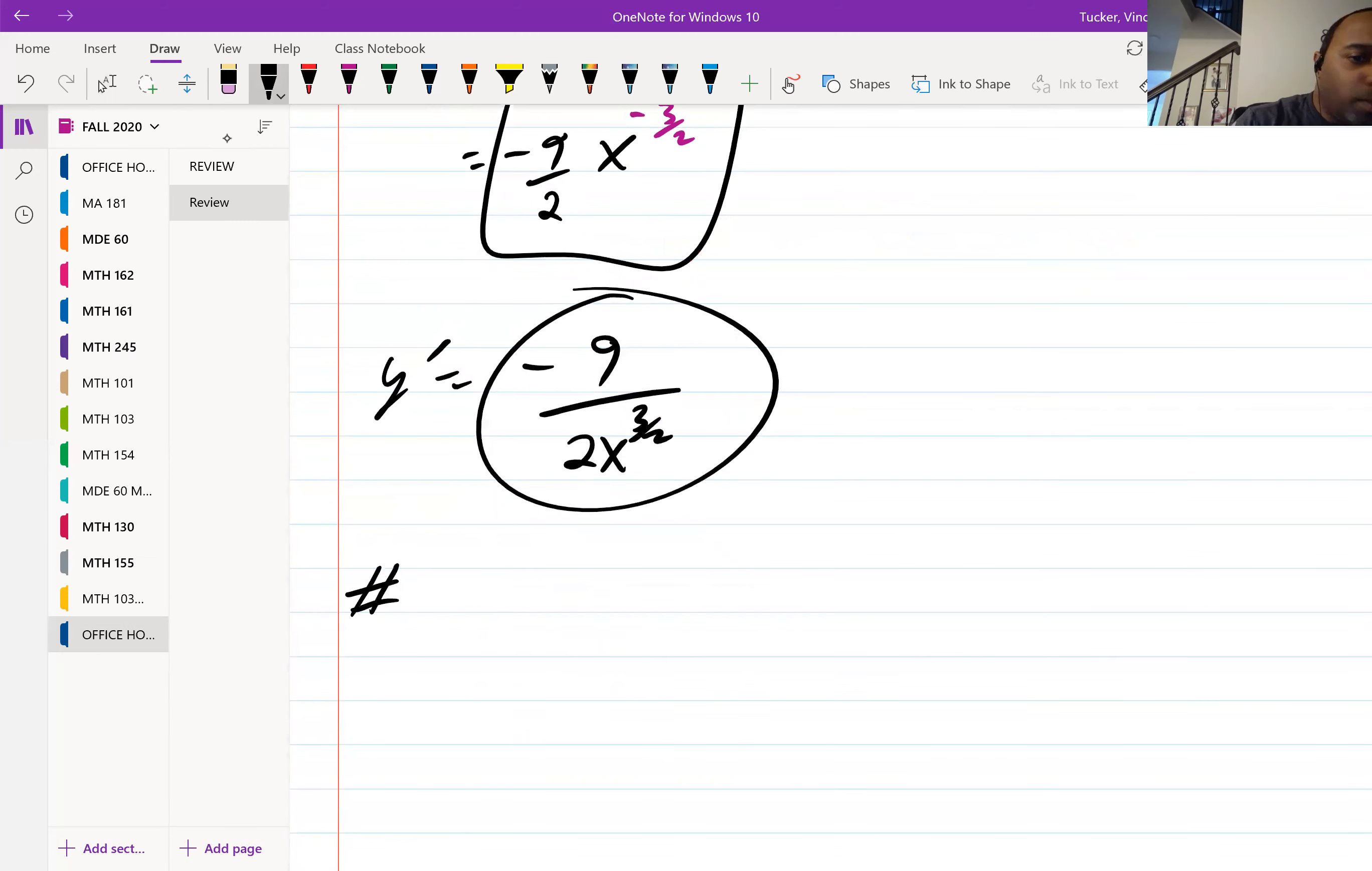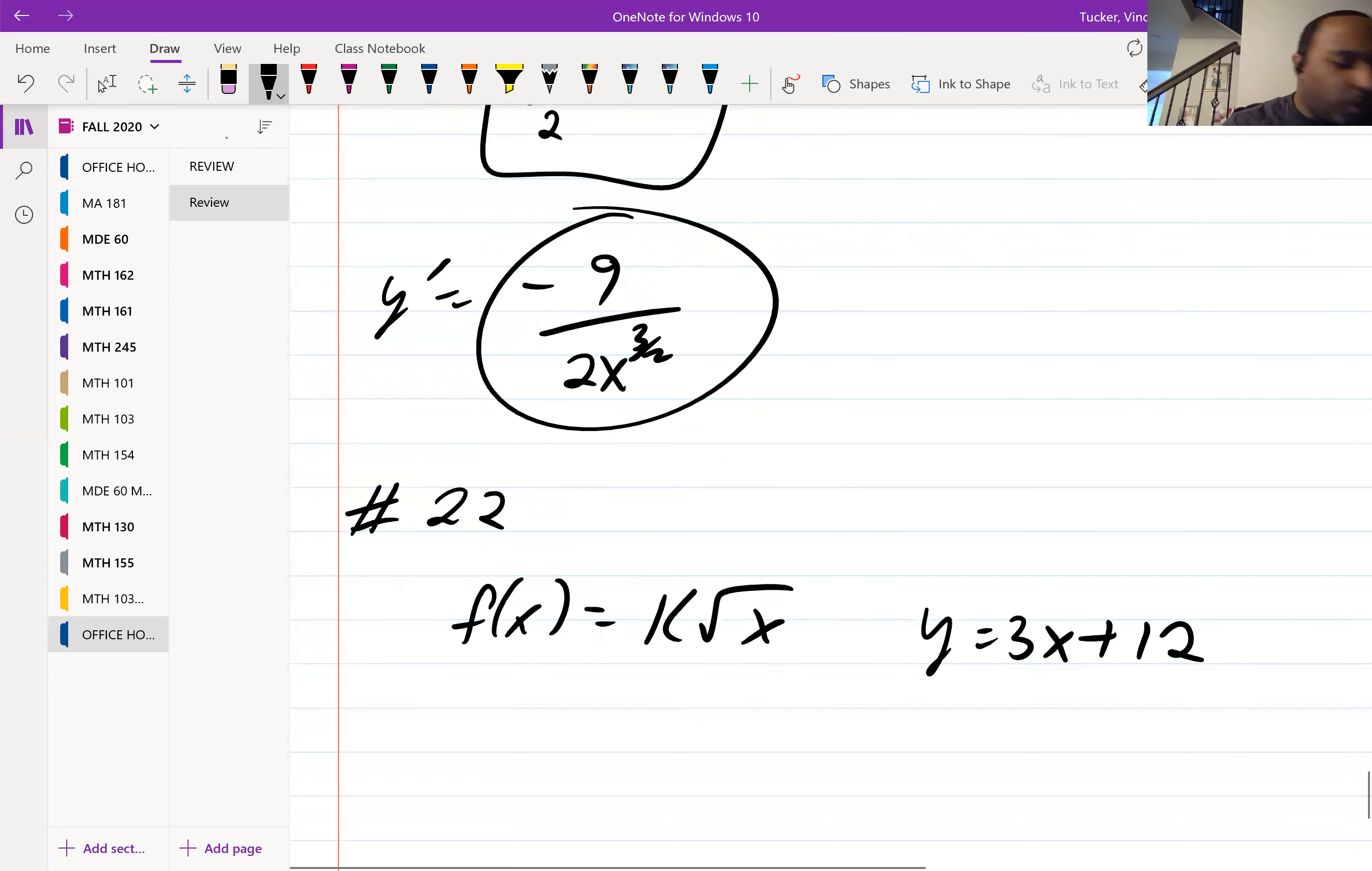So this next one is 22. It gives us f of x equal to k square root of x, and it gives us y equal to 3x plus 12. So first off, we can recognize that y is equal to f of x.